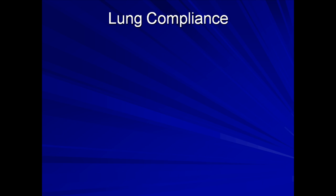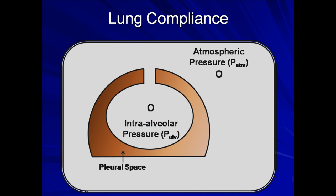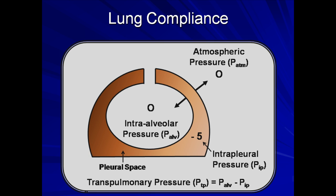I will now move on to discuss lung compliance. The compliance of any enclosed space, be it the lung, a heart, or a hot air balloon, is a measure of how the volume of that space changes with changes in pressure. Here is a simple diagram of the forces responsible for compliance within the respiratory system. First, there is the inward elastic recoil of the lung. There is also the outward elastic recoil of the chest wall. As mentioned in lecture one, these two opposing forces create a negative pressure within the pleural space. The difference between this negative intrapleural pressure and the intra-alveolar pressure is known as the transpulmonary pressure, and it is actually this transpulmonary pressure that drives changes in lung volume.